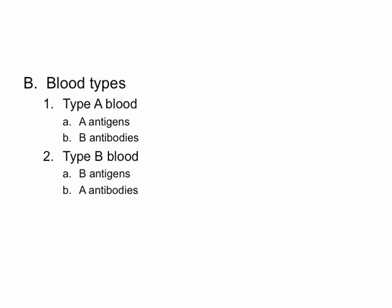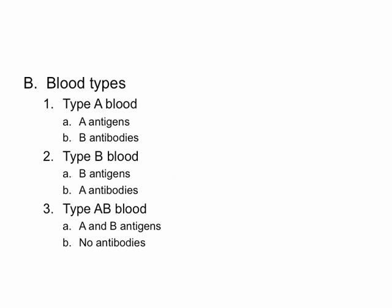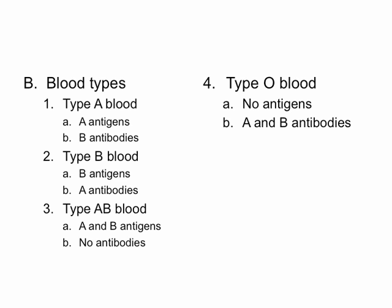It gets a little trickier for type AB and O. People who have type AB blood have both type A and type B antigens on their cell surface molecules. Therefore, they have no antibodies, because then they would be attacking themselves. People who have type O blood — think of O as a zero — have no antigens, so the cell surface is going to be smooth, just like an O would be. They do, however, have type A and B antibodies.